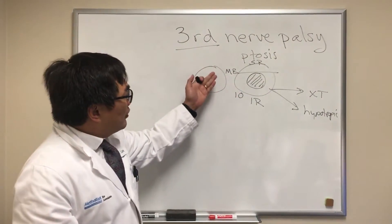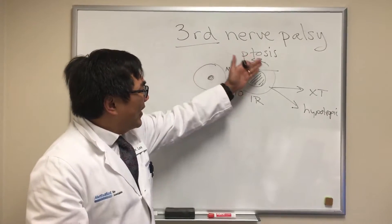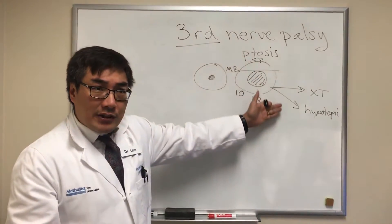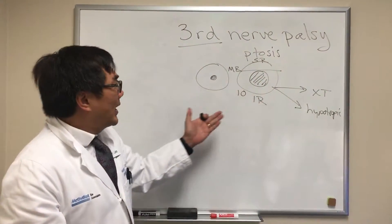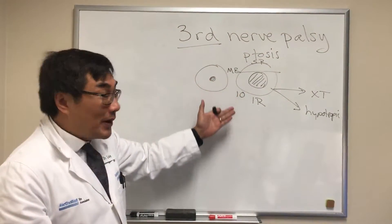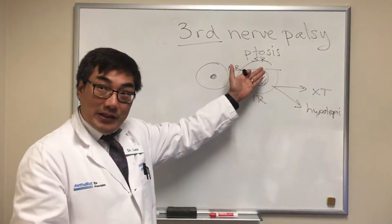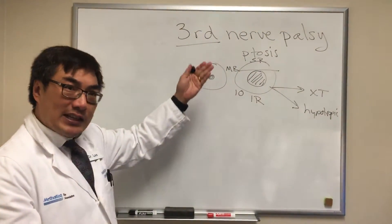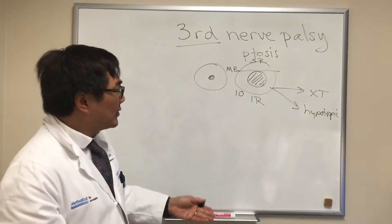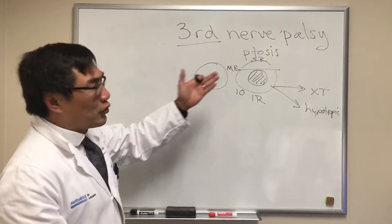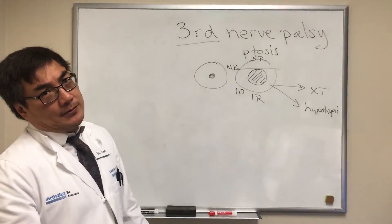However, you might not have every branch of the third nerve involved. You might have only partial involvement, or just divisional involvement of the superior division with the lid and the superior rectus. So you can have partial or complete palsies.